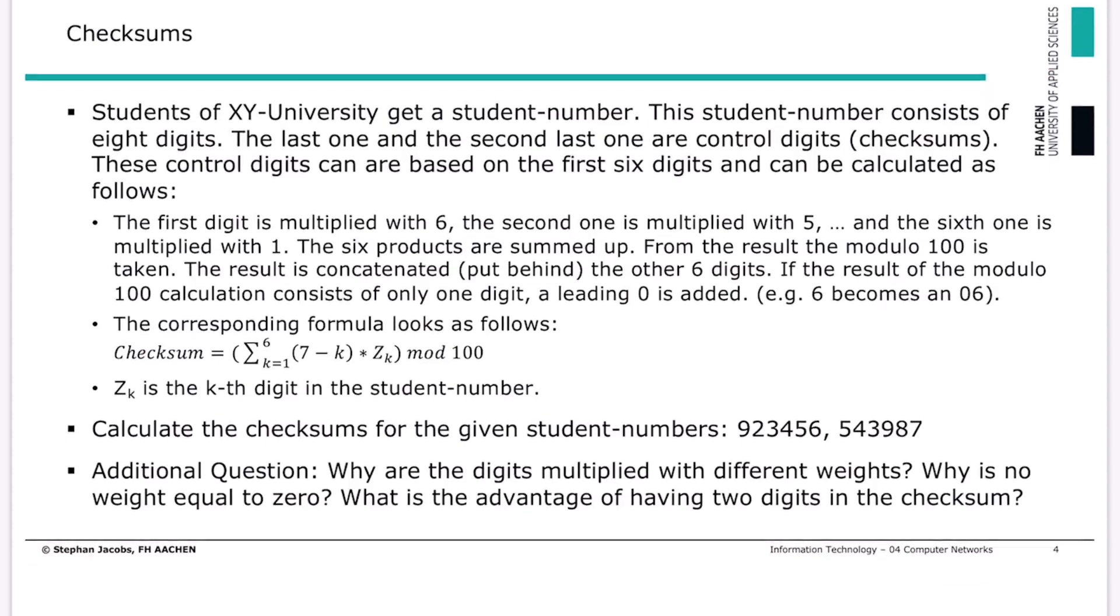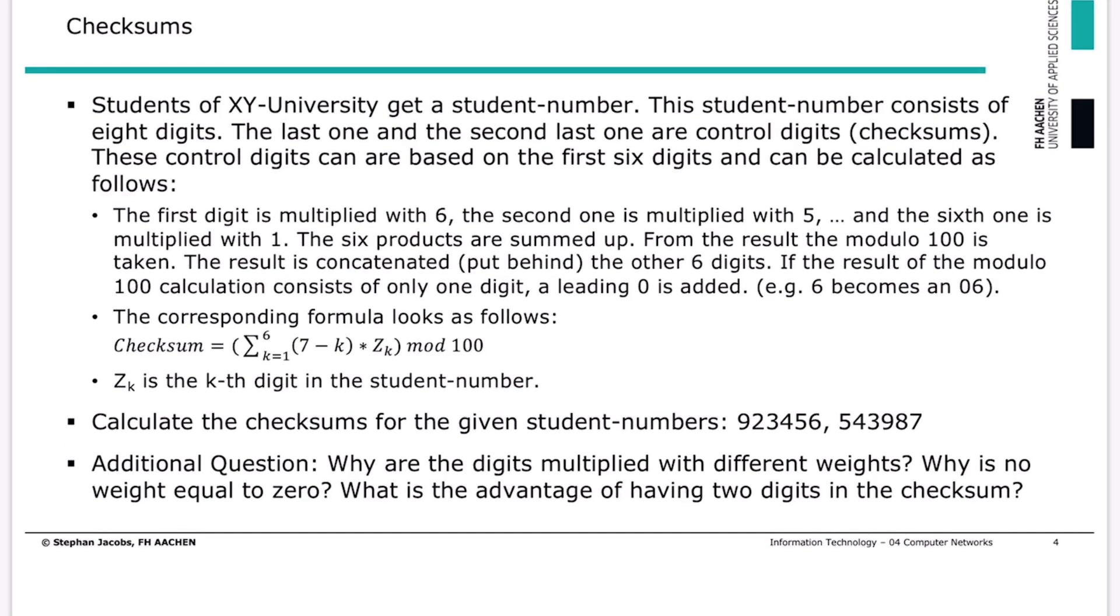Let's have a look at checksums. As discussed in the lecture, your immatriculation number, your student number, is composed of six numbers which are freely available and the seventh number that's a checksum.